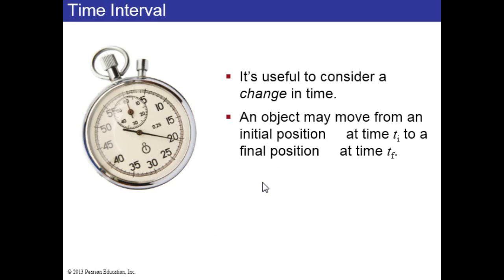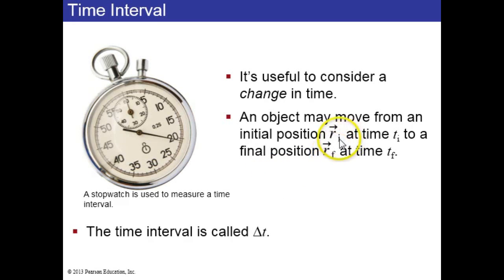It's useful to consider a change in time. For example, that object that moved from ri to rf, you could say that when it was at position ri, the time was t sub i, and when it was at its final position the time was t sub f. The time interval tf minus ti is called delta t. You might measure it with a stopwatch, for example.